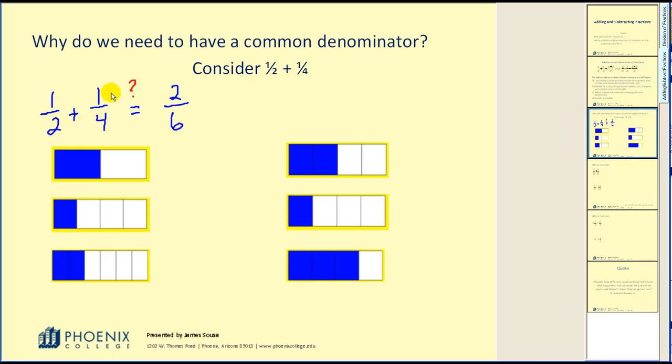Well here's a geometric model for why that does not work. Here's a model for one-half. Here's a model for one-fourth. And if I was to take these two and combine them into a single fraction it doesn't make sense that two-sixths would be our answer for a variety of reasons.